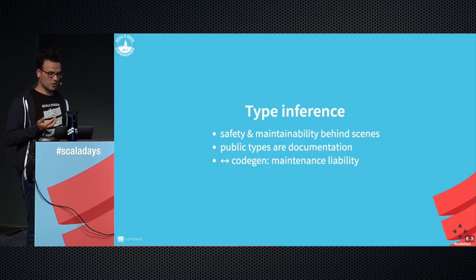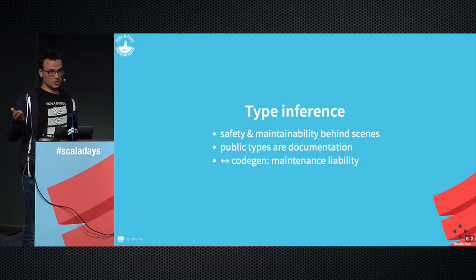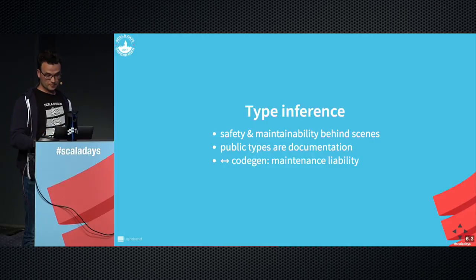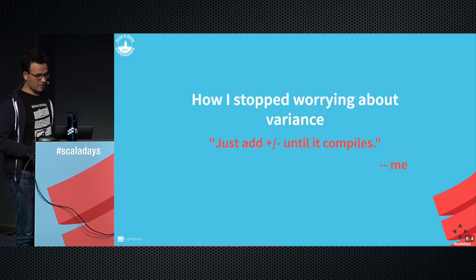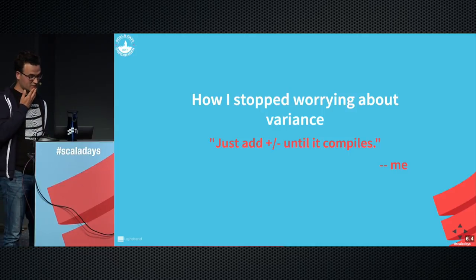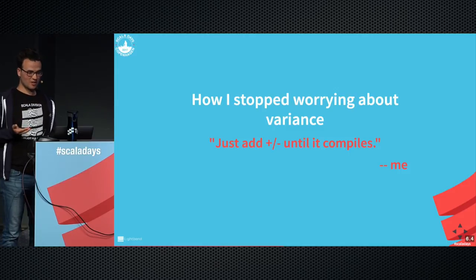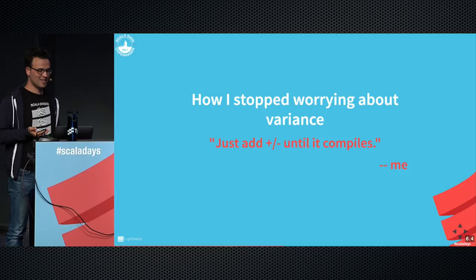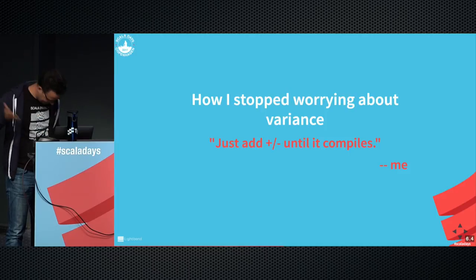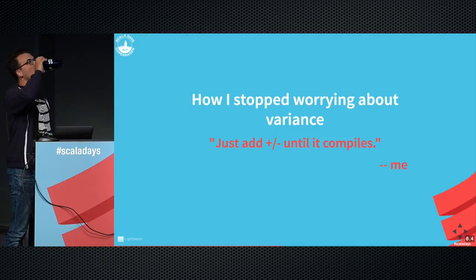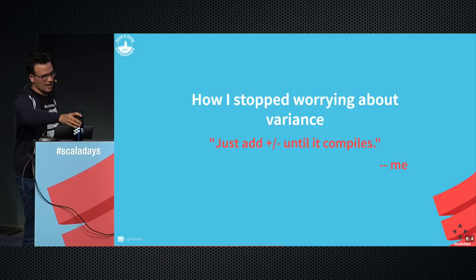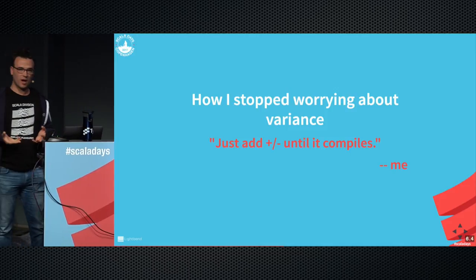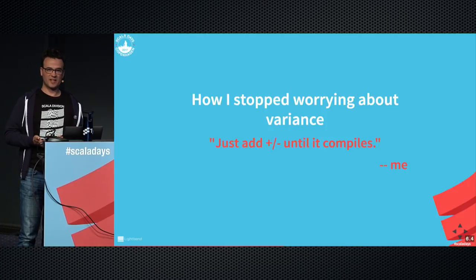A couple of examples of what I think is important to have in your language: type inference. You could say your IDE can just write those types out for you — but congratulations, now you just have more code to maintain. Types are documentation, so on public members you should write them. I'll admit freely, even though this is recorded, that I sometimes just add plus and minus signs until it compiles. But there's a much deeper point: you can trust the compiler to get this right for you. That's what static typing is about for me.